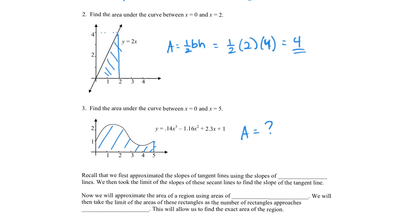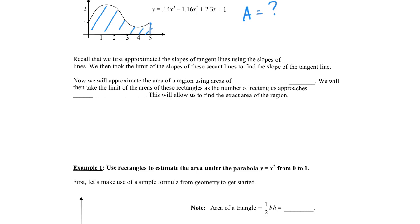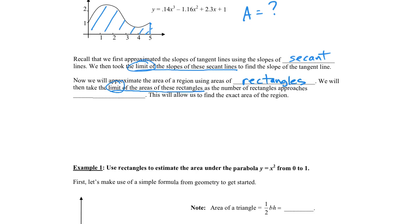To do this, let's think back to when we first started talking about derivatives. We first approximated the slopes of tangent lines using the slopes of secant lines, then took the limit of those slopes. So now we're going to approximate the area of a region using the areas of rectangles, then take the limit of the areas of these rectangles as the number of rectangles approaches infinity. This will allow us to find the exact area of the region.